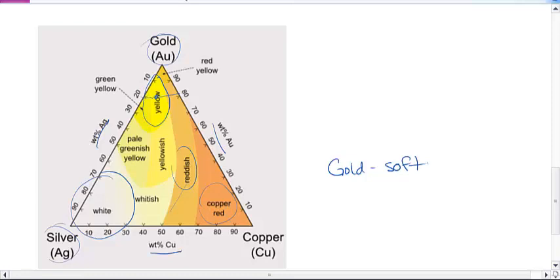If it's 18 karat gold or 24 karat gold, it has far more actual gold in it than something that's 10 karat gold. 10 karat gold has much less gold, and it's got an alloy of, depending on the type of gold, more silver and copper in it.